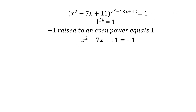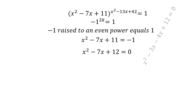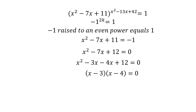Setting x squared minus 7x plus 11 equals negative 1, we add 1 to both sides to get x squared minus 7x plus 12 equals 0. We need two numbers whose product is 12 and whose sum is negative 7: that's negative 3 and negative 4. So we have x squared minus 3x minus 4x plus 12 equals 0, which factors as x minus 3 and x minus 4 equals 0, giving x equals 3 and x equals 4.